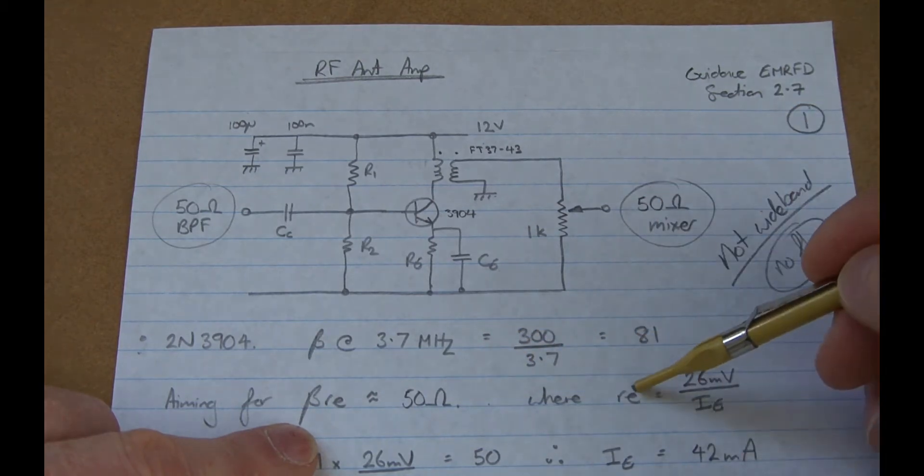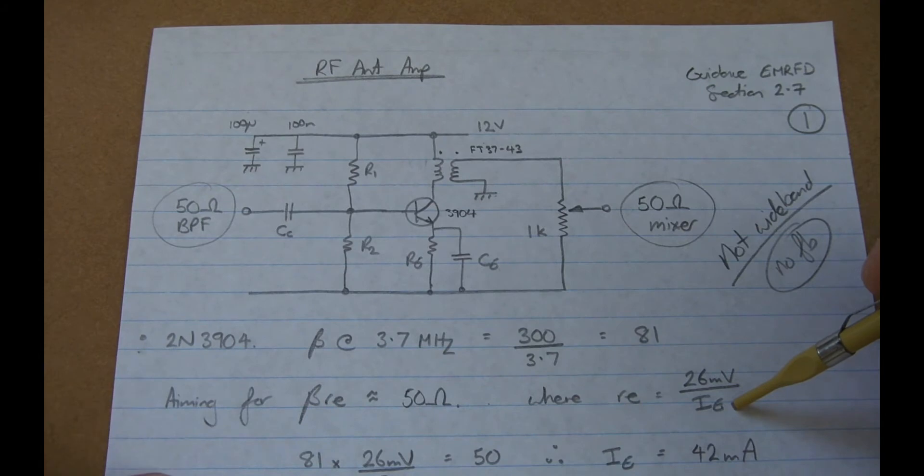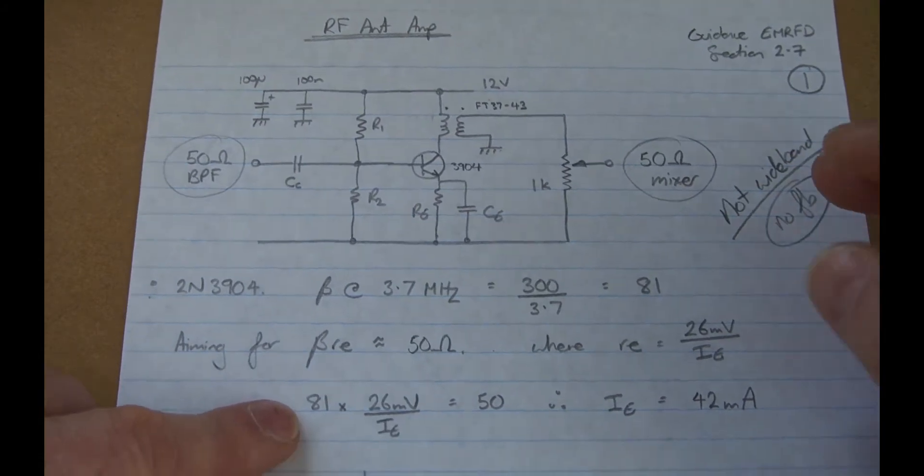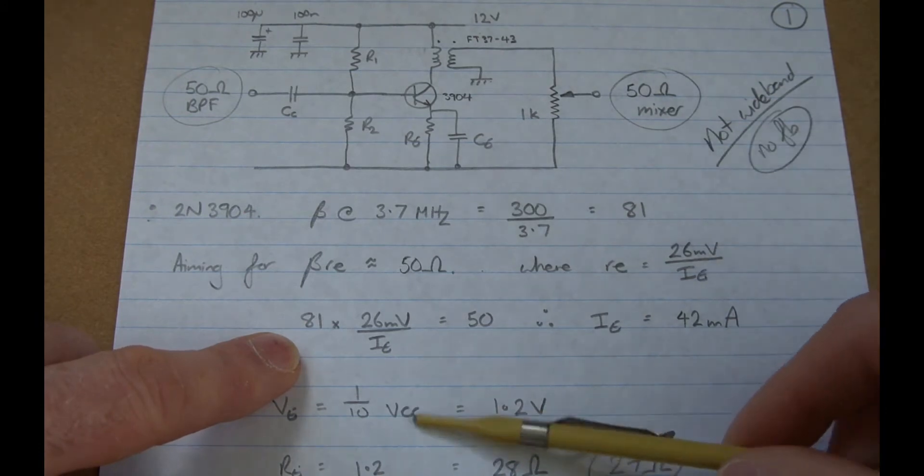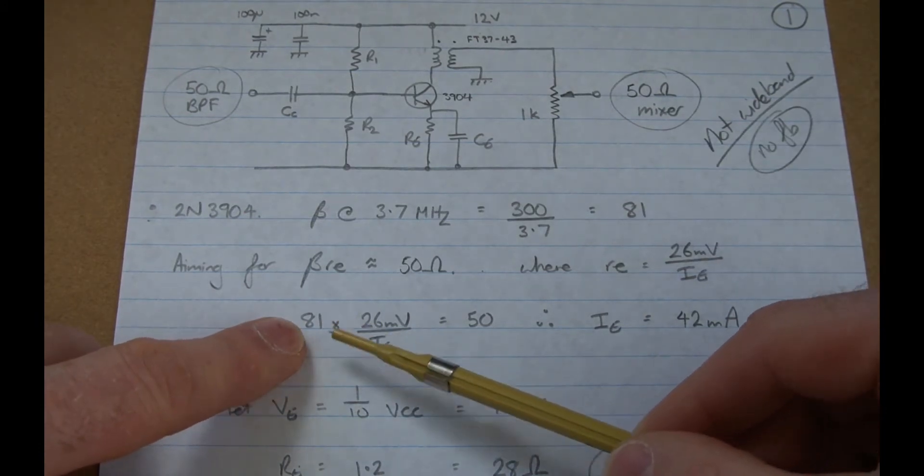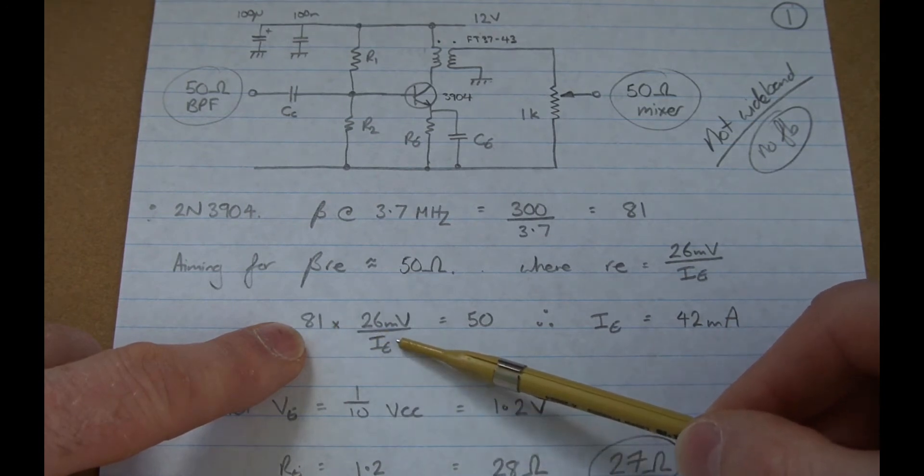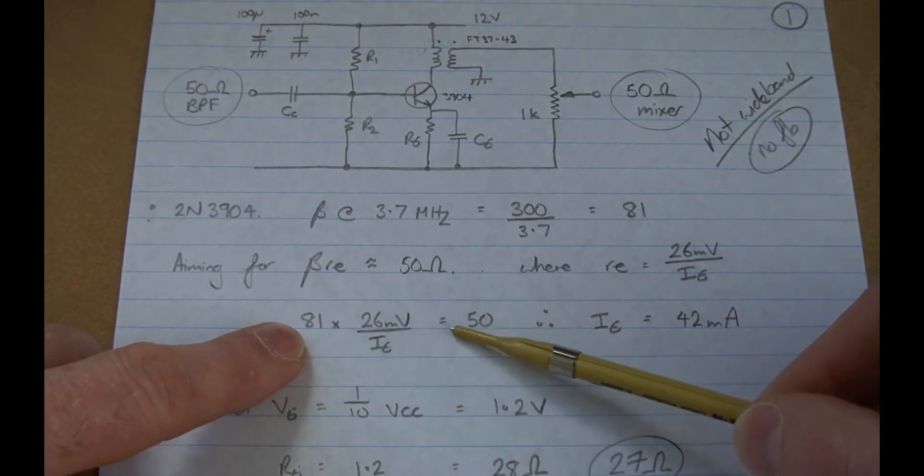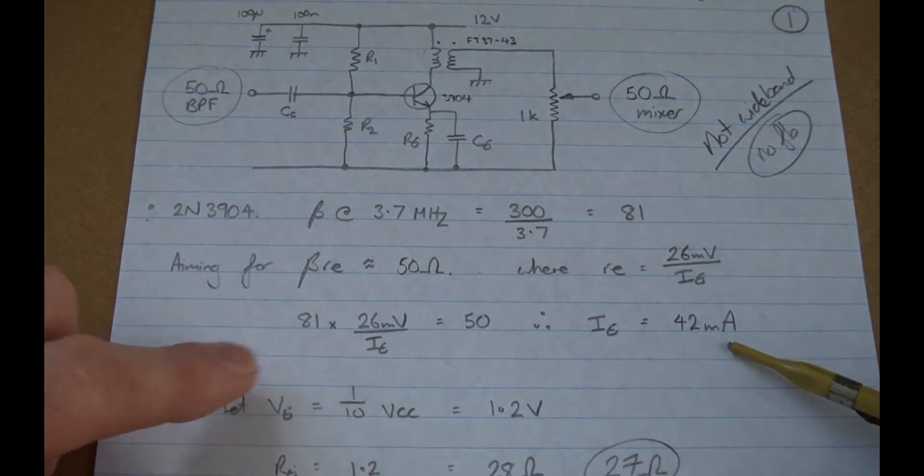So if we rearrange and insert values, so 81 for beta times little RE, which is 26 over IE equals 50. Solving for IE, I get 42 milliamps.